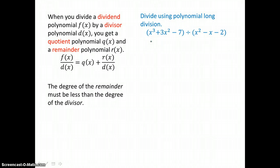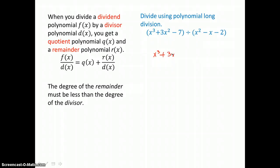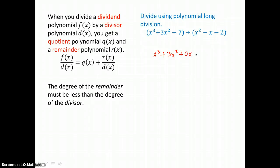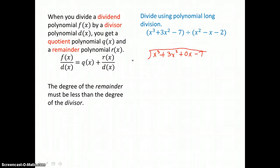We're going to first use polynomial long division to divide this cubic by this quadratic. We'll set it up for long division: x cubed plus 3x squared. There is no x term, and I need to represent that degree, so I'll put in 0x minus 7. We're going to divide by x squared minus x minus 2.